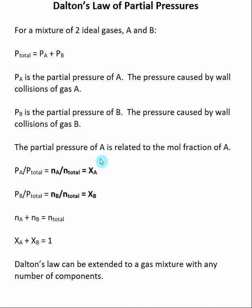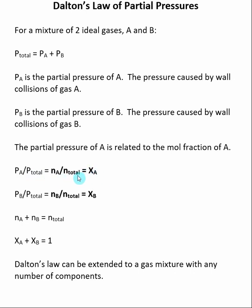These pressures are related to the number of atoms, or moles, of each one of the gases. The partial pressure of A is related to the mole fraction of A. Mole fraction is the number of moles of A divided by the total number of moles of gas. The partial pressure of A divided by the total pressure is equal to the number of moles of A divided by the total number of moles of gas. The mole fraction is represented by X, so X sub A is the mole fraction of A, which equals the partial pressure of A divided by the total pressure.